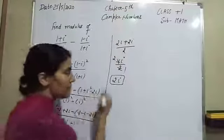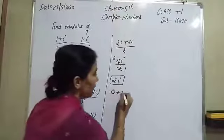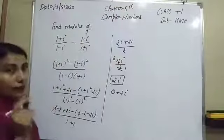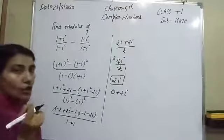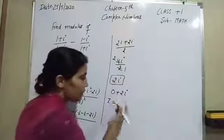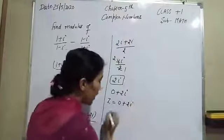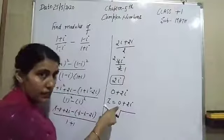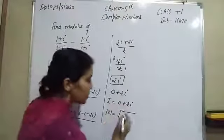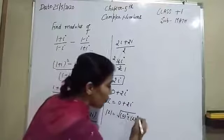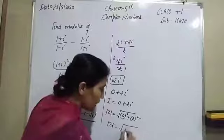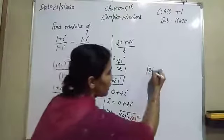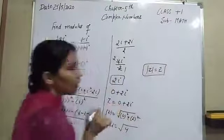That is not a complex number because only the imaginary part is there. So firstly convert it into the form of a complex number by writing it as 0 plus 2 eta. Now we have to find its modulus. The modulus equals the square root of the real part squared plus the imaginary part squared: root of 0 squared plus 2 squared, which is root of 4, that is 2. So its modulus is 2.